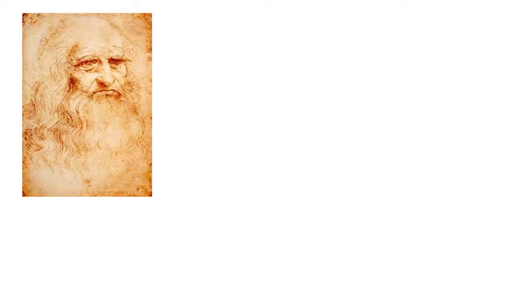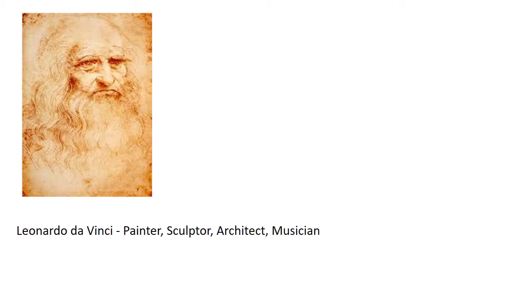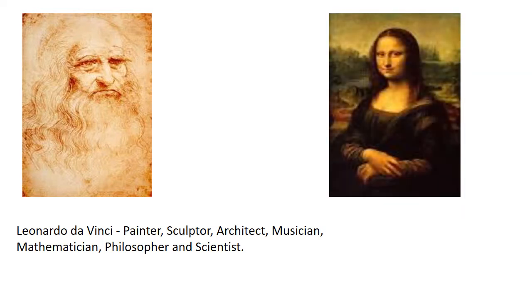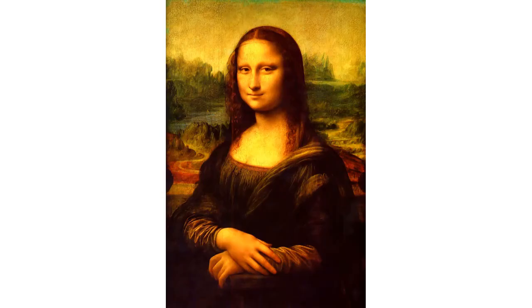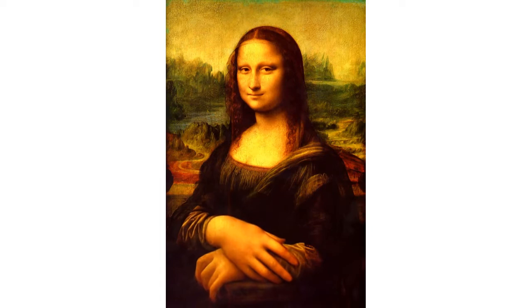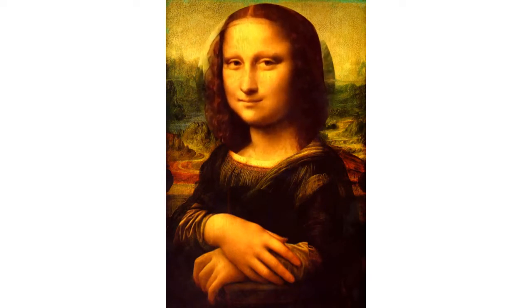The impact of Renaissance can also be seen in the paintings of Leonardo da Vinci. He was a genius of all time — an expert painter, sculptor, architect, musician, mathematician, philosopher, and scientist. One of his famous paintings is the Mona Lisa. While painting this portrait, Leonardo da Vinci closely studied human anatomy. You can see the fingers and the muscles — we can feel the muscles of her fingers, and look at her face, how beautifully it is expressed.